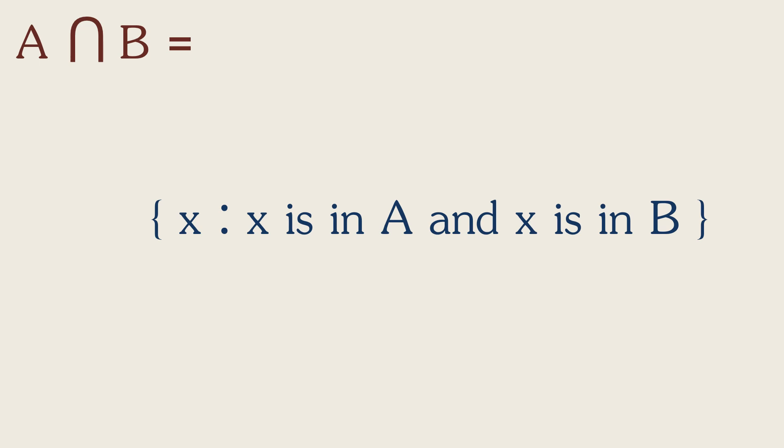This is the conventional way to write that. And it reads, A intersection B is the set of all X, such that, or with the property that, X is in A and X is in B.